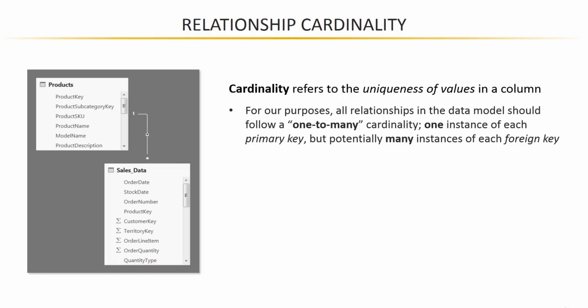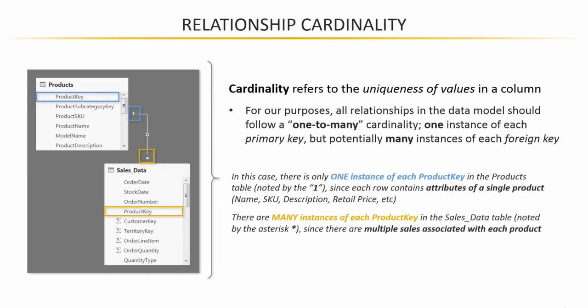One instance of every primary key from our lookups, but potentially many instances of each foreign key from our data tables. Looking at the screenshot here, we have one instance of each product key in the product lookup table — you'll see that blue box around the number one, since each row contains attributes of a single product: name, SKU, price, etc. On the data table side of that relationship, because there are many instances of each product key, which is the foreign key, the relationship terminates in an asterisk in that yellow box, because there are multiple sales associated with each product ID.